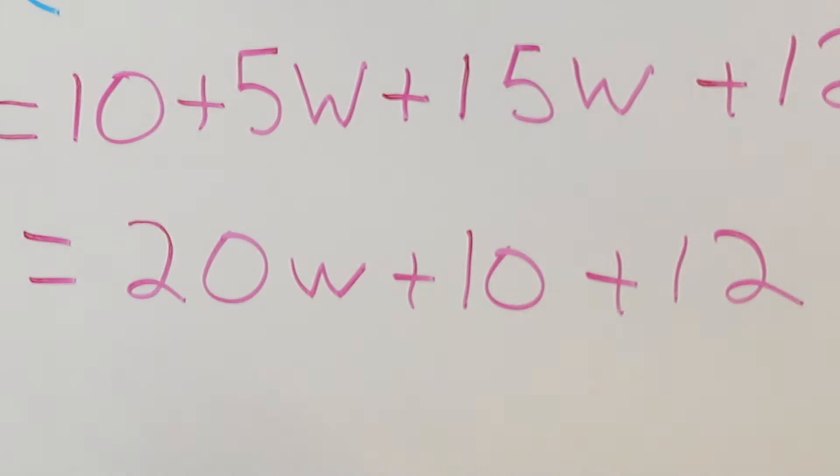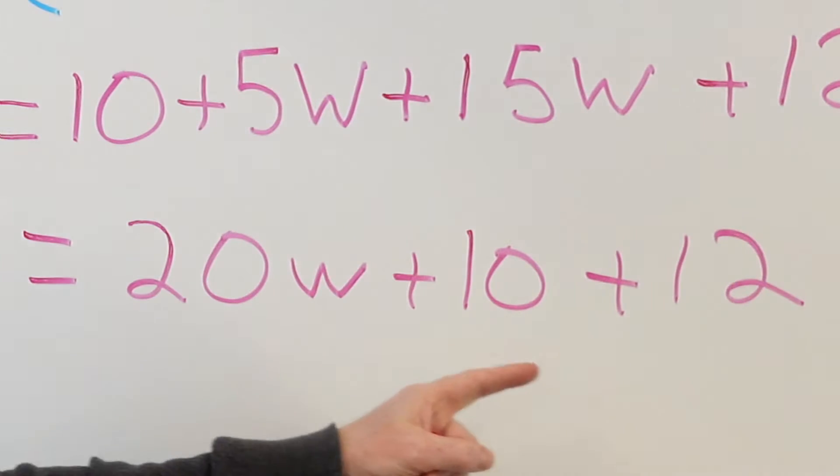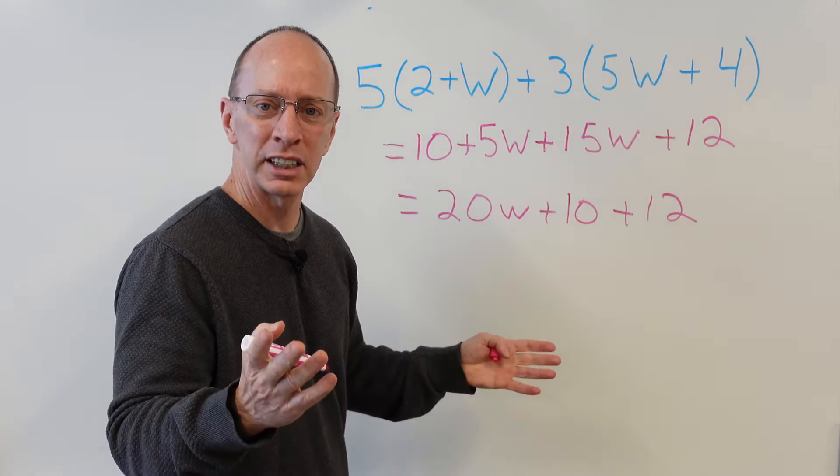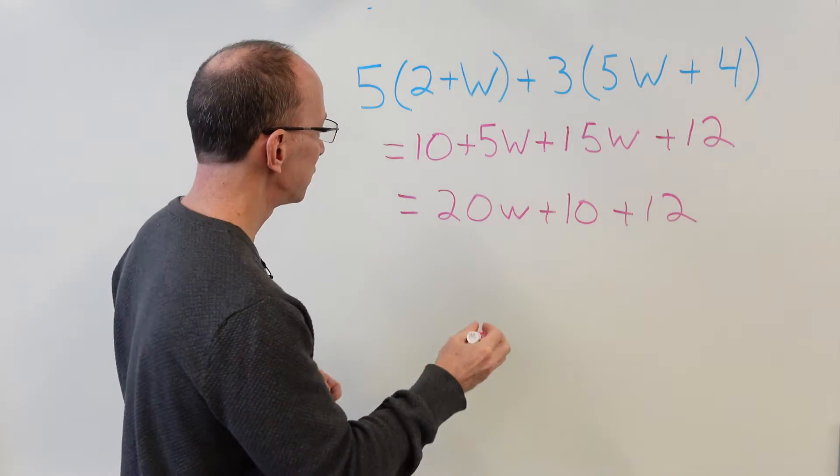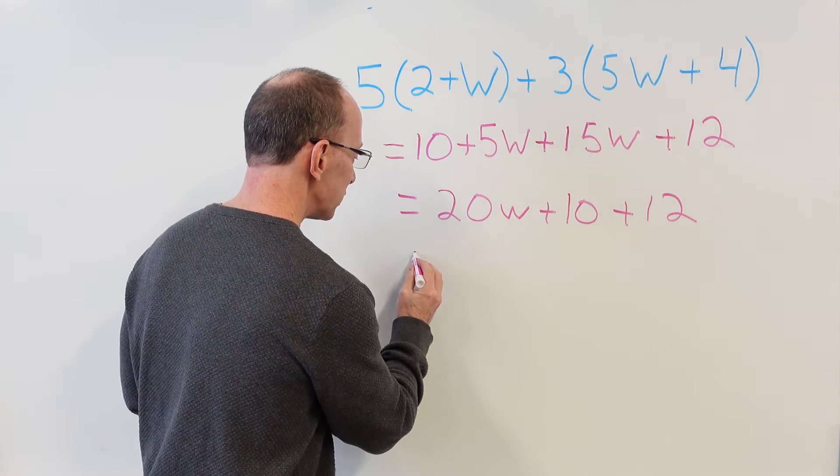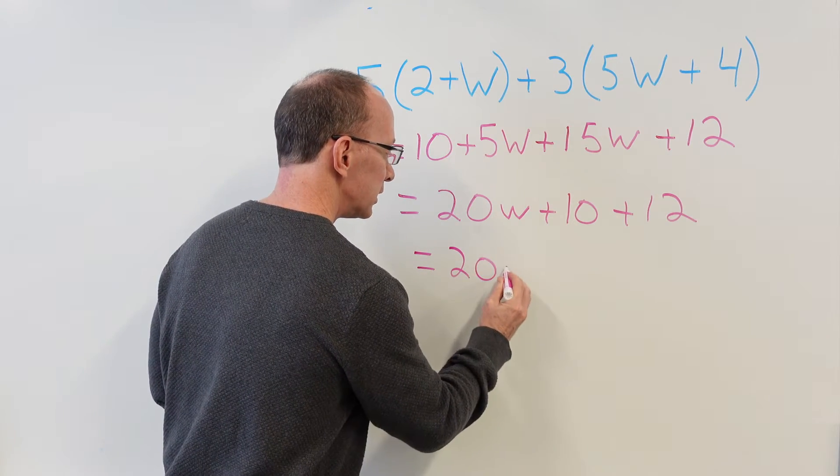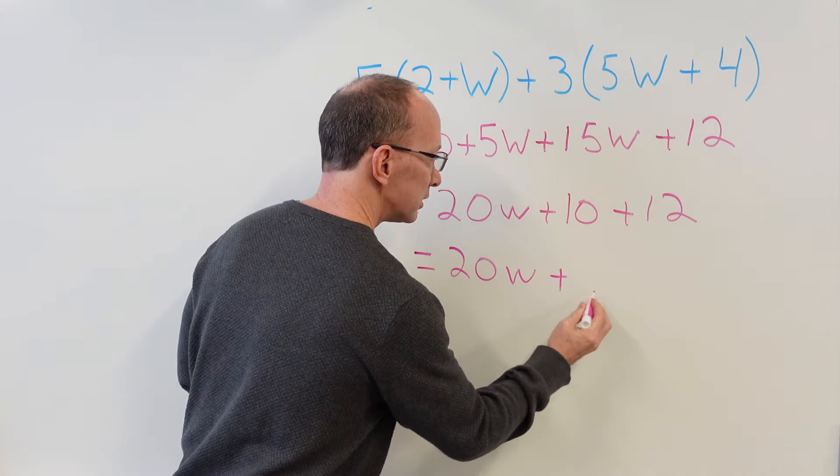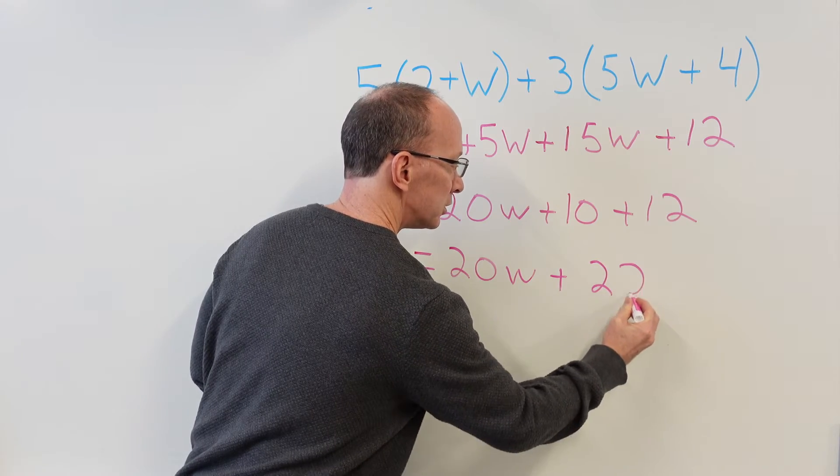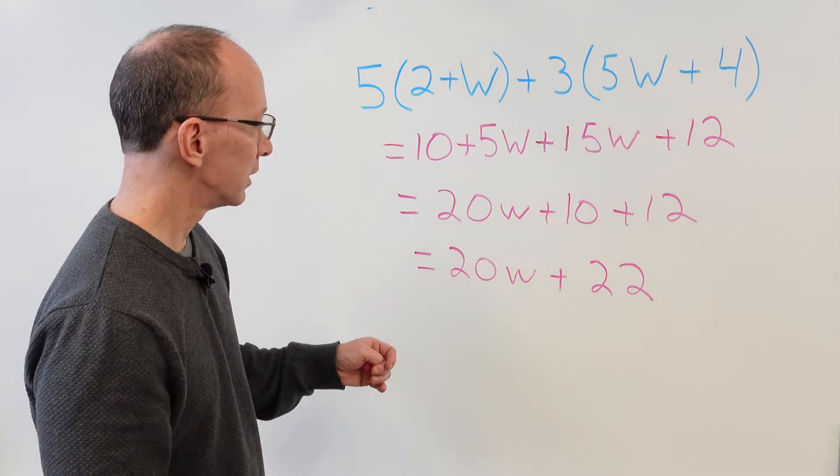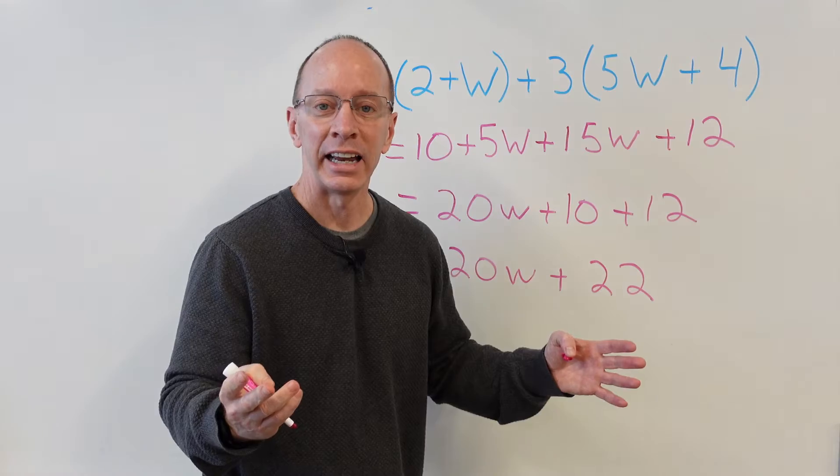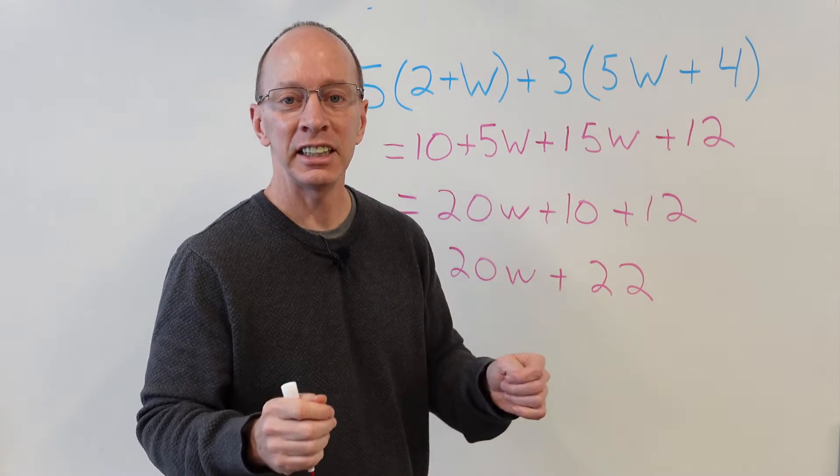Now we're going to look for constants to combine. So the 10 and the 12, I think we can add those. What is 10 plus 12? 22. 20w plus 22. That is the answer. That was easy, cheesy, lemon squeezy.